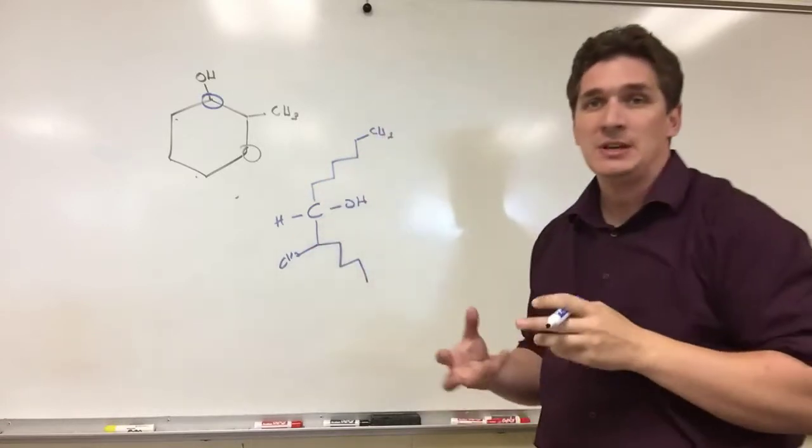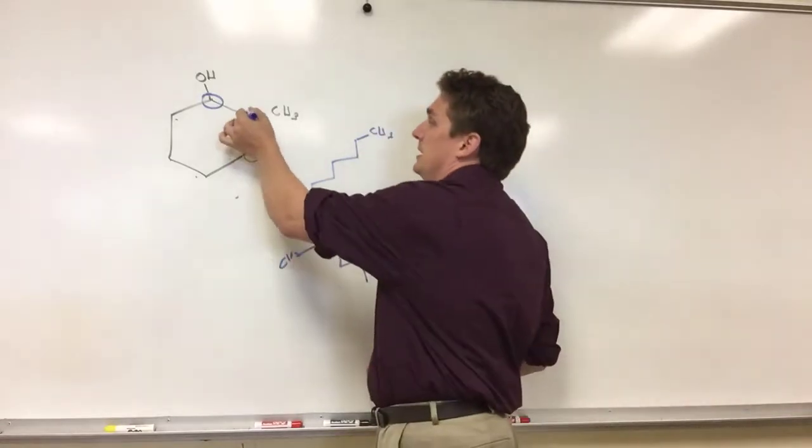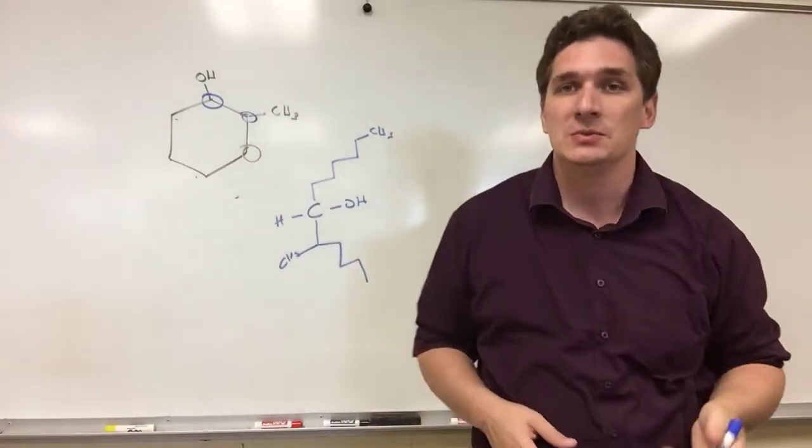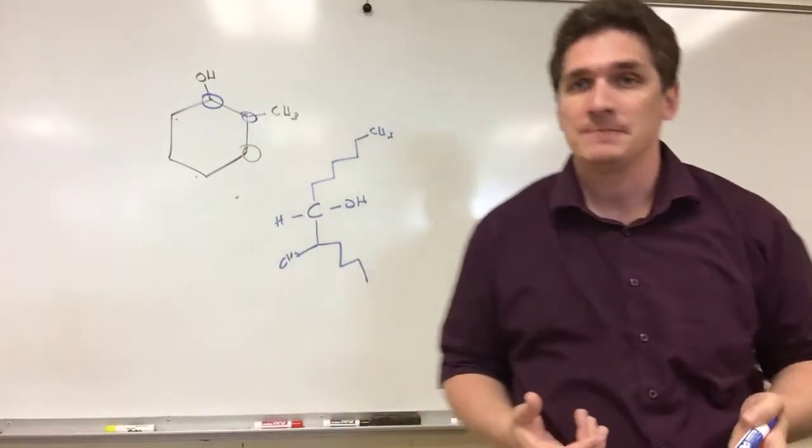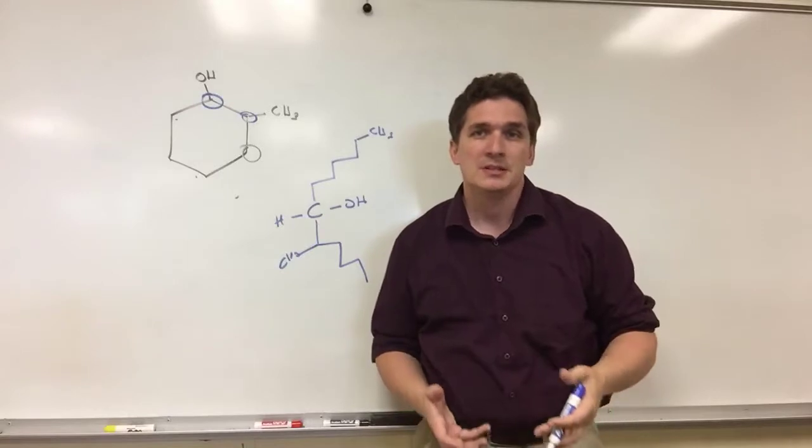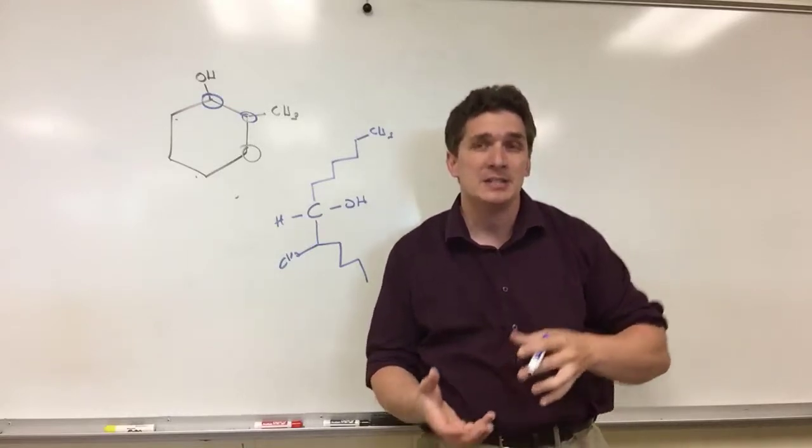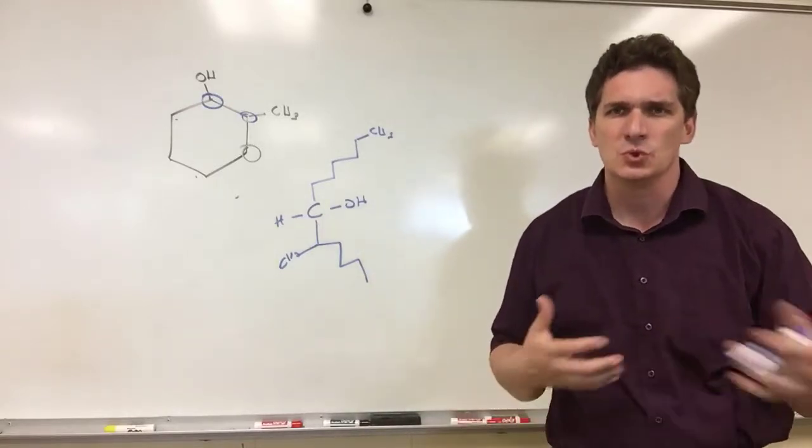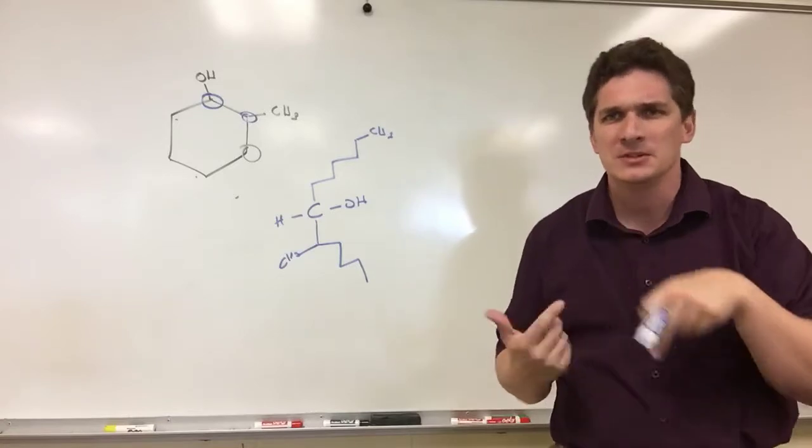So we definitely have a chiral center here. And we repeat the exercise for the CH3 here—we're going to see the exact same answer. So in terms of working with rings, the best way to deal with it to see if you're actually getting unique groups around the carbon, meaning that the carbon has four different groups around it...